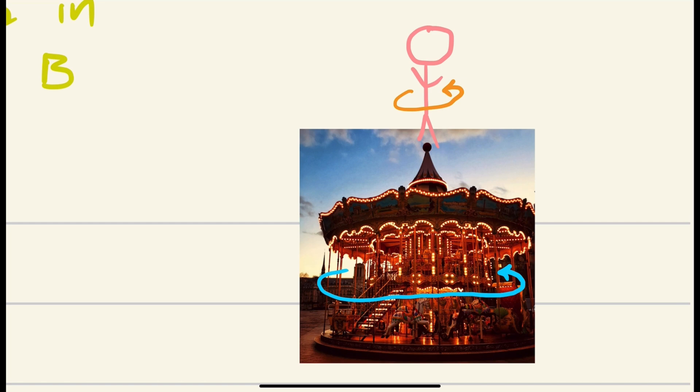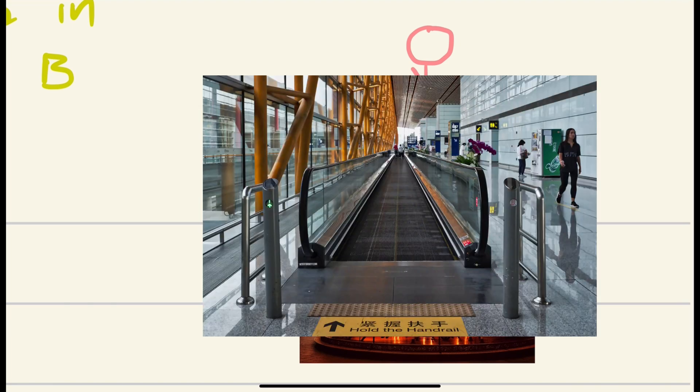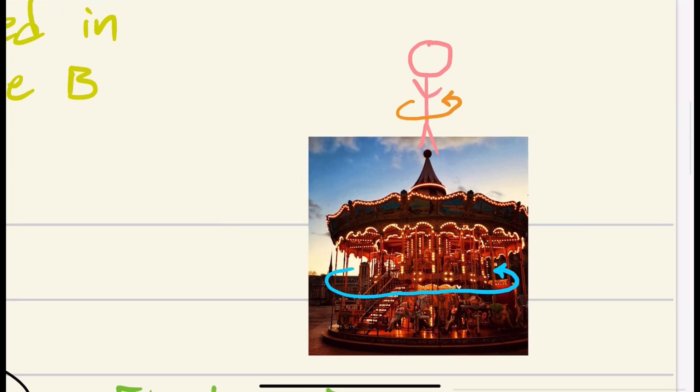The linear example of this is like those moving conveyor belt sidewalks at airports. If you're walking on ground, you're walking at your normal speed. But if you start walking on one of those conveyor belts, you're not only walking at your normal speed, you're getting a speed boost from the sidewalk. So you're walking at the speed of the sidewalk plus your normal walking speed. Same idea, but we're spinning.